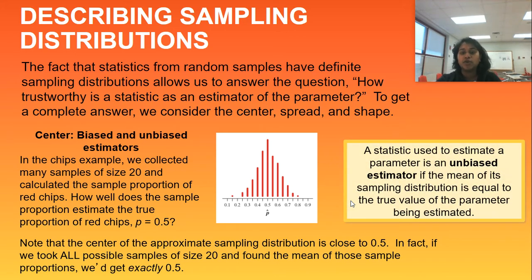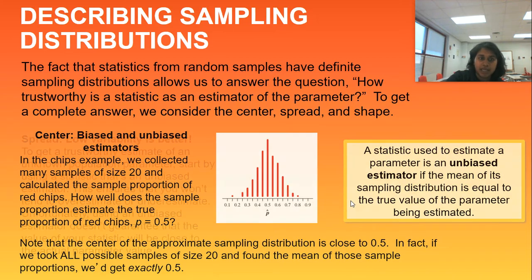So again, here's the formal definition of an unbiased estimator. So important that you recognize to use an unbiased estimator, the mean of the sampling distribution must be equal to the true value of the parameter being estimated.